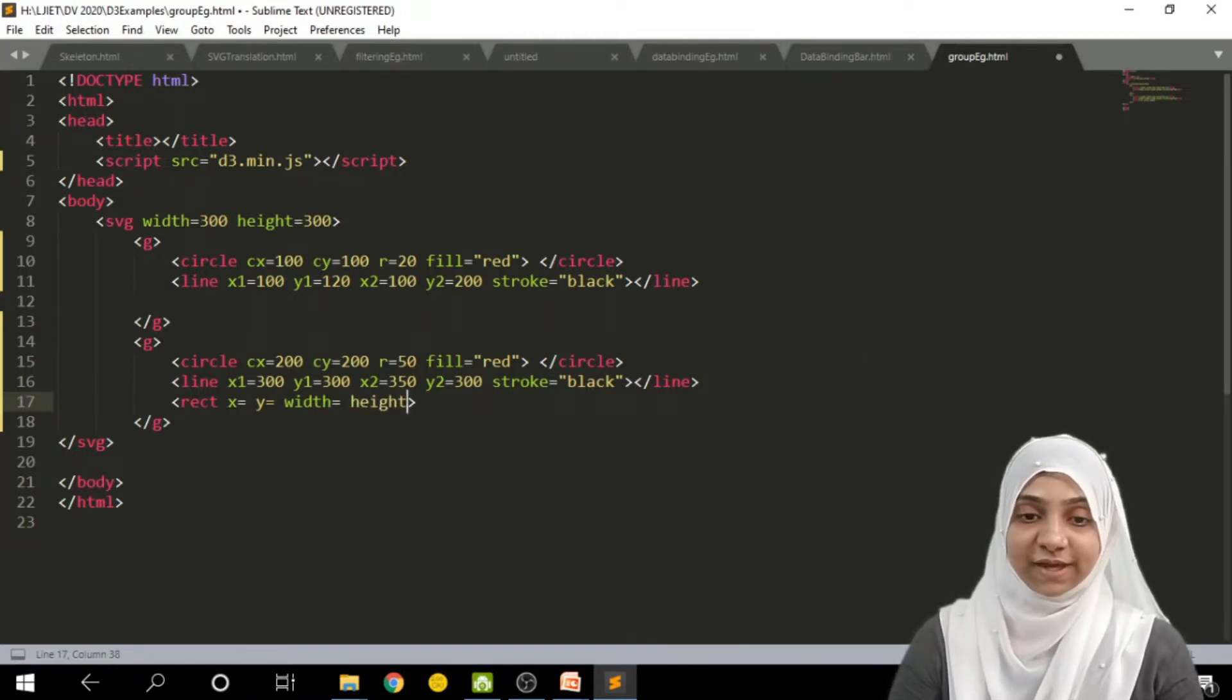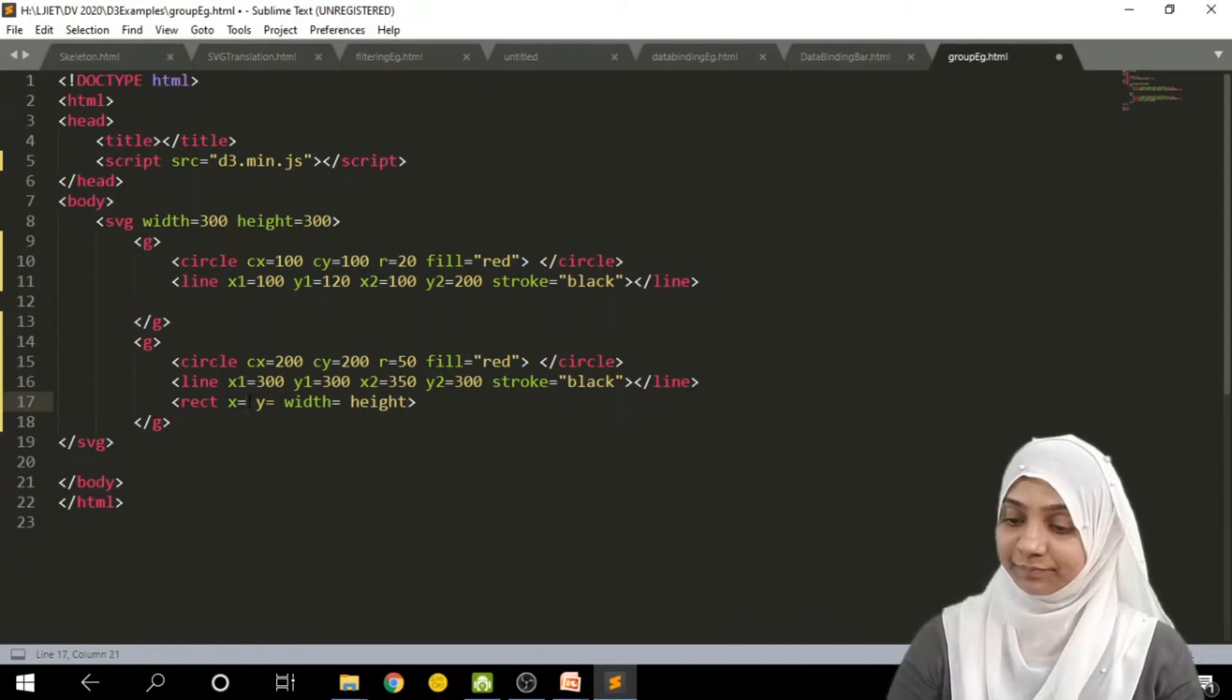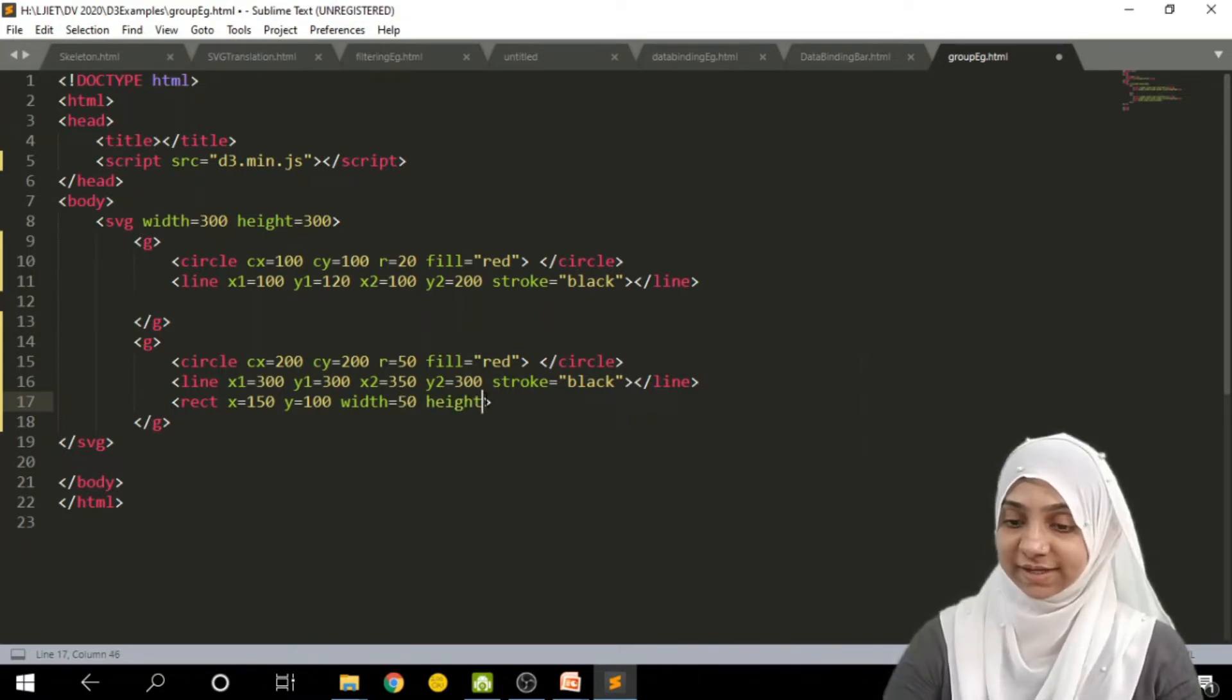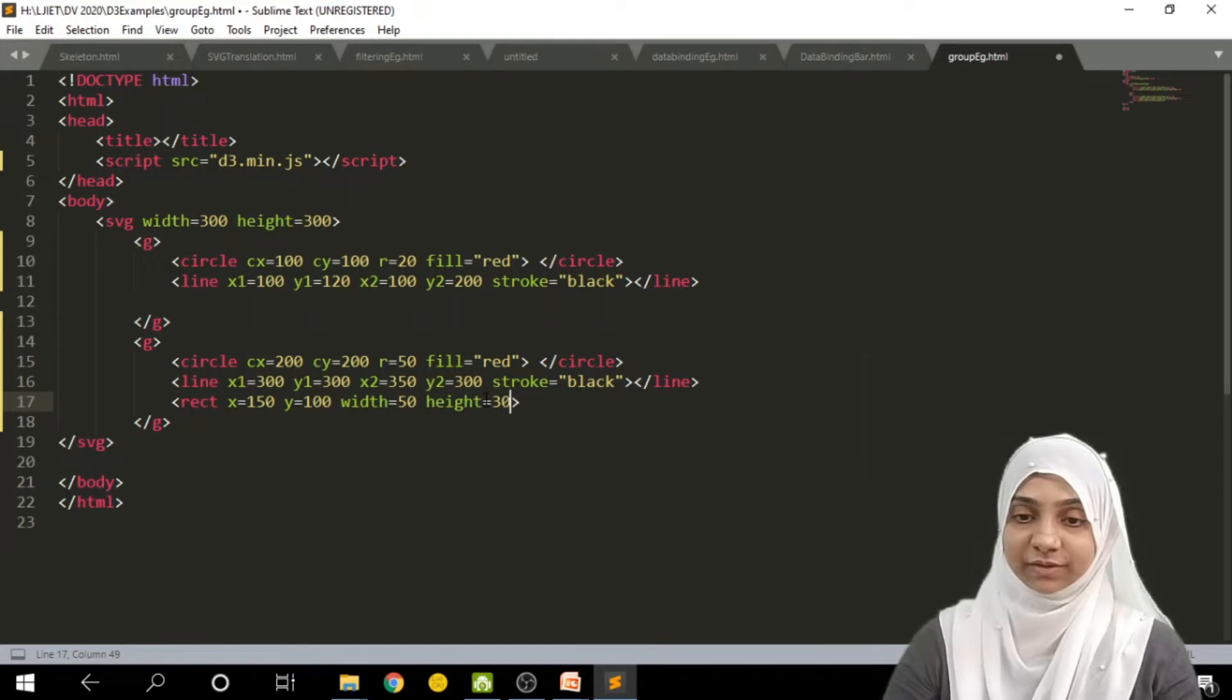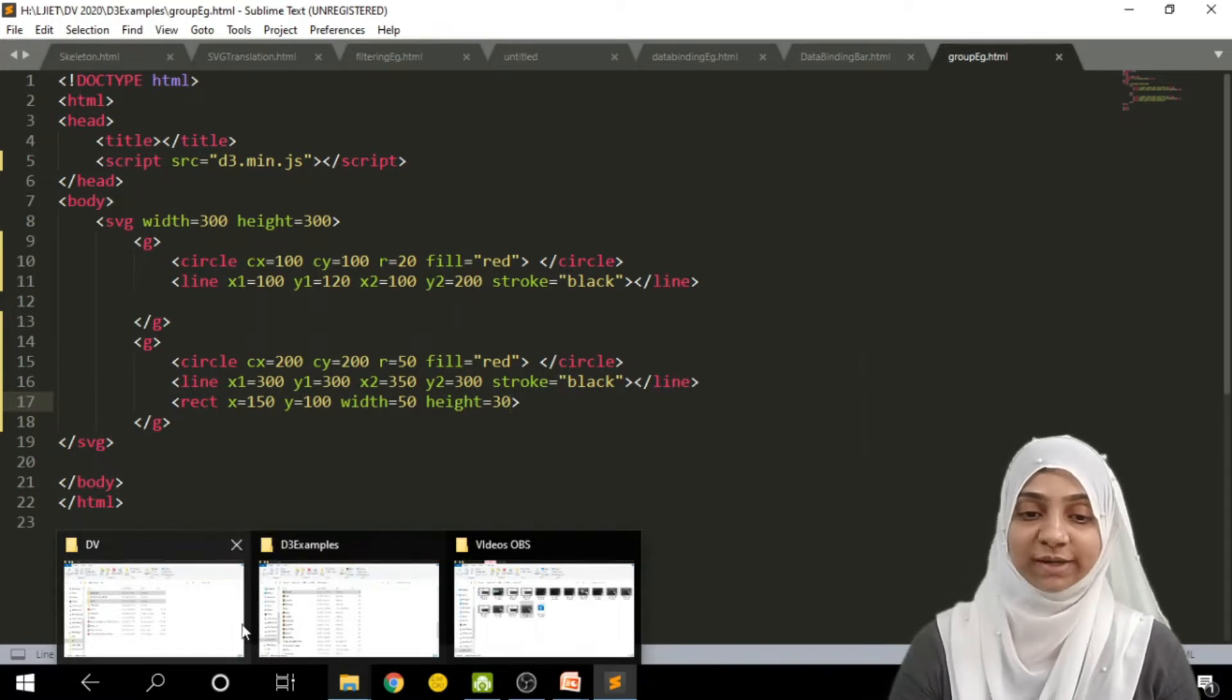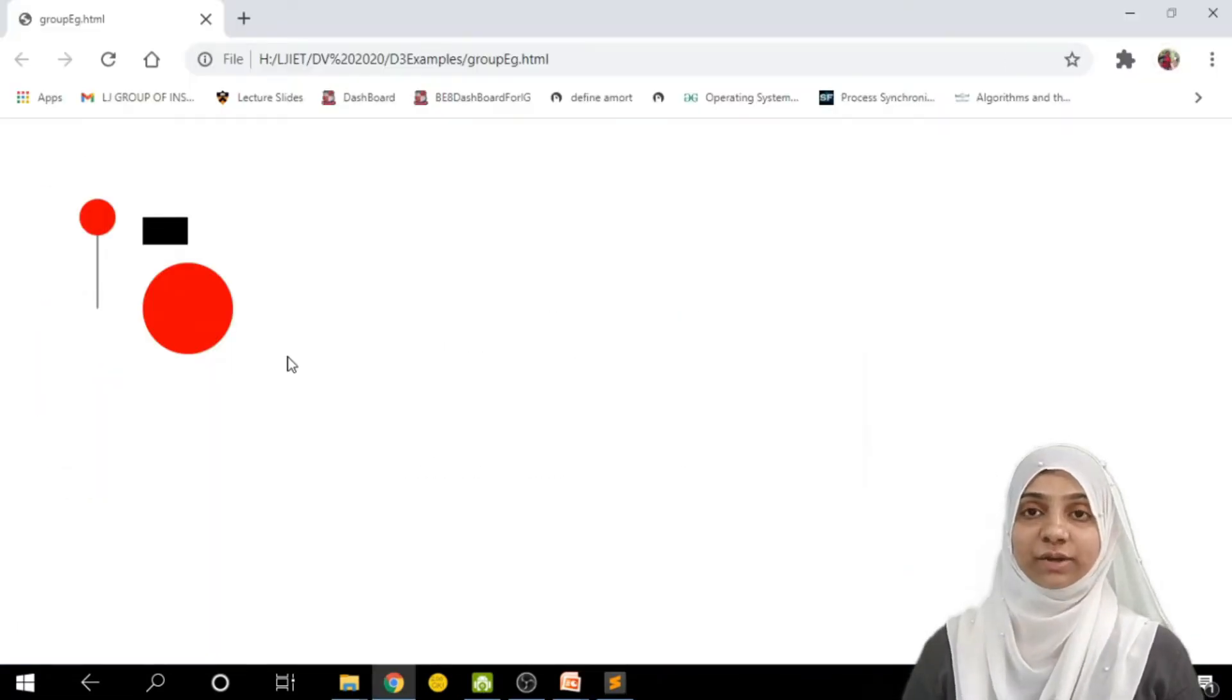x coordinate is 150, y coordinate is 100, width is 50 and height is 30. I will save this document. I will go to the browser and look how these documents look like. Now, this is how it looks like. From this particular document, I will have no idea about group.